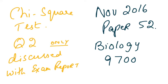As asked by some of the students, I am discussing a paper 5 question which is based on the chi-square test. This is the November 2016 paper 5, question number 2.